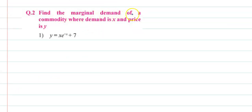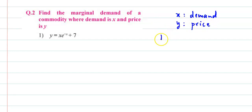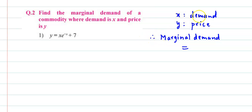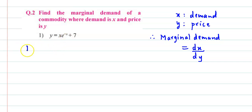Find the marginal demand of a commodity where demand is x and price is y. यहाँ पर x है demand and y जो है वो है price, और हमें पूछा गया है marginal demand. Marginal demand is nothing but derivative of demand with respect to price, यानी dx by dy. So marginal demand means हमें derivative ढूंढना है demand का with respect to price — that is dx by dy. अब यहाँ पर हम differentiate करते हैं with respect to x.